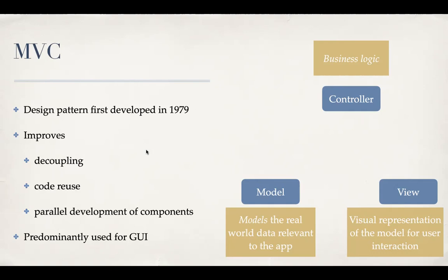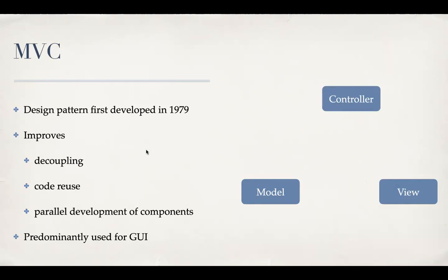Now let's talk about how these components interact with each other. Typically, you as a user start interacting on the view — you may click on something, swipe something, or type something. The view then calls methods on the controller, or in other words, sends a signal to the controller that the user has interacted in a certain way. The controller in turn, if appropriate, calls the model and manipulates it by calling appropriate methods. Typically a model would only expose getters and setters to the controller, so the controller can call setters to make changes.